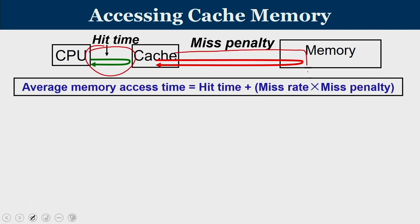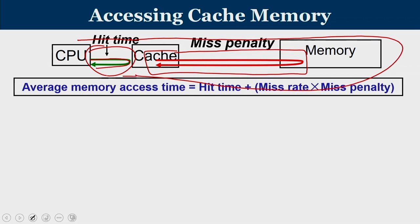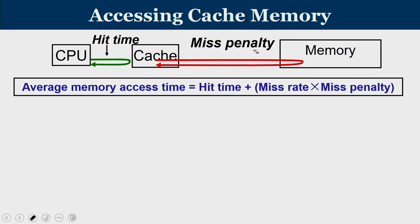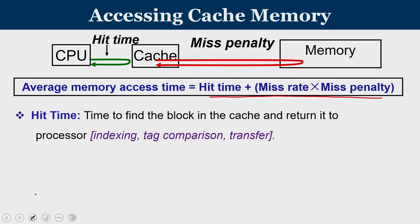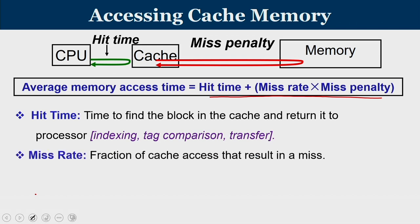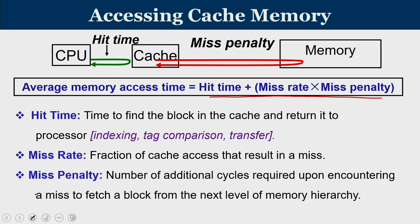The red component is present only when there is a miss. So if it is a hit, it is purely the hit time. If it is a miss, it takes part of the hit time, goes all the way to main memory, comes back, and completes the remaining portion. Average memory access time is defined as hit time — the time to access the cache and return the corresponding word — plus miss rate times miss penalty. Hit time involves time to index, tag comparison, and transfer of data. Miss rate is the fraction of cache accesses resulting in a miss, and miss penalty is the additional cycles required to fetch a block from the next level of memory hierarchy.